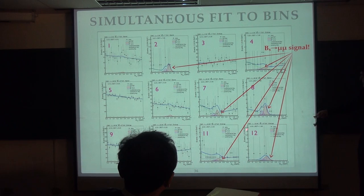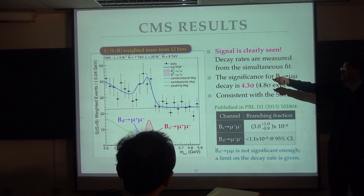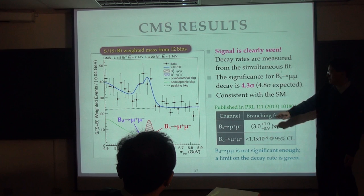So what we do here is we project everything together. Put that together and weight by what we call a signal to s plus b weight. So it becomes something like this. So you see a big bump, which is here, is a BS to mu mu bump. And another bump nearby is the BD to mu mu bump. So we can say the signal is pretty clear at this moment.